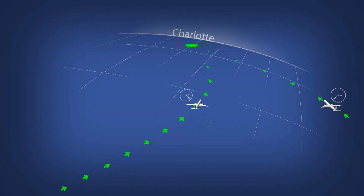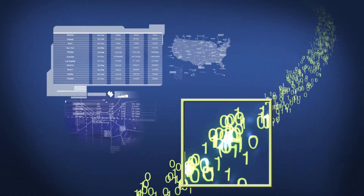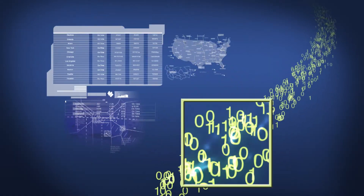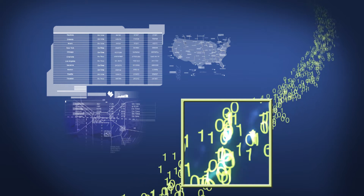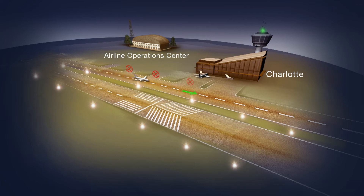As the flights converge on Charlotte, the flight data object provides FAA and airline systems with predicted arrival times. With this data, optimal runway assignments, taxi routes and gate availability are calculated and planned. Conformance monitoring signals pilots along the proper trajectory to the correct runway and taxi route. As the aircraft arrive at the proper gates, the surface flight data object updates FAA and airline systems to indicate the flights are complete.